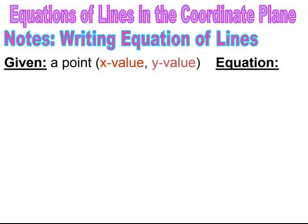Now we're going to be writing equations of the line. If you're given a point and the slope is 0, it is a horizontal line, and the equation of the line is y equals whatever the y value is. So when the slope is 0, write y equals and look for the y value in the ordered pair — that's what goes into the equation.